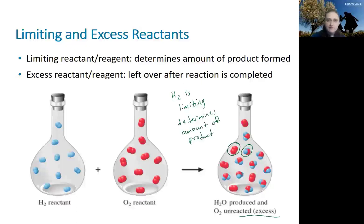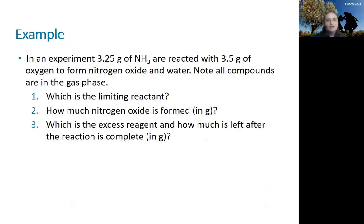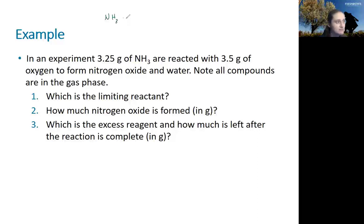Before we finish this section, let's look at another example problem. We have ammonia and oxygen combining to form nitrogen oxide and water. The first step is that we need to balance this chemical equation.